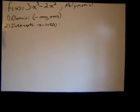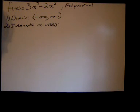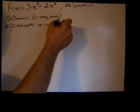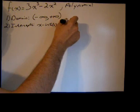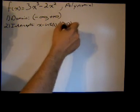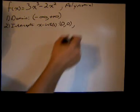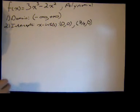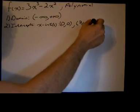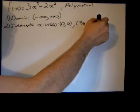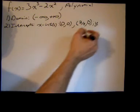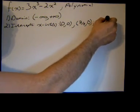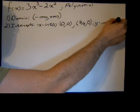So x intercepts, we found out a second ago, were zero, zero, and two-thirds, zero. And refer back to the vid before. And then our y intercept, well, if our x intercept is zero, zero, then our y intercept is zero, zero as well.